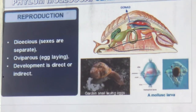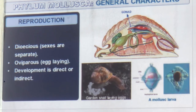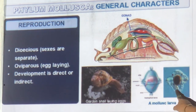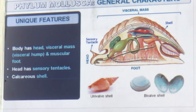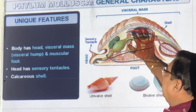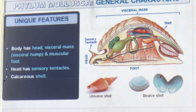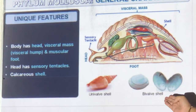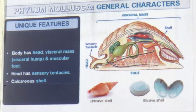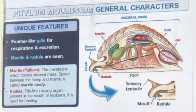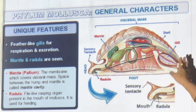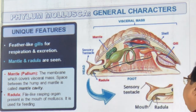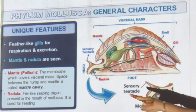Reproduction: dioecious — male and female are separate. May or may not have larvae. The mollusk larva is called the veliger. The body has three parts: head (with tentacles), visceral mass, and a calcareous shell. A muscular foot is used to crawl. Some are univalve (one shell) and some are bivalve (double shell). Shell is made of calcium carbonate. Unique: feather-like gills (ctenidia) for respiration and excretion. Mantle is present — the layered mantle in oysters makes pearls.